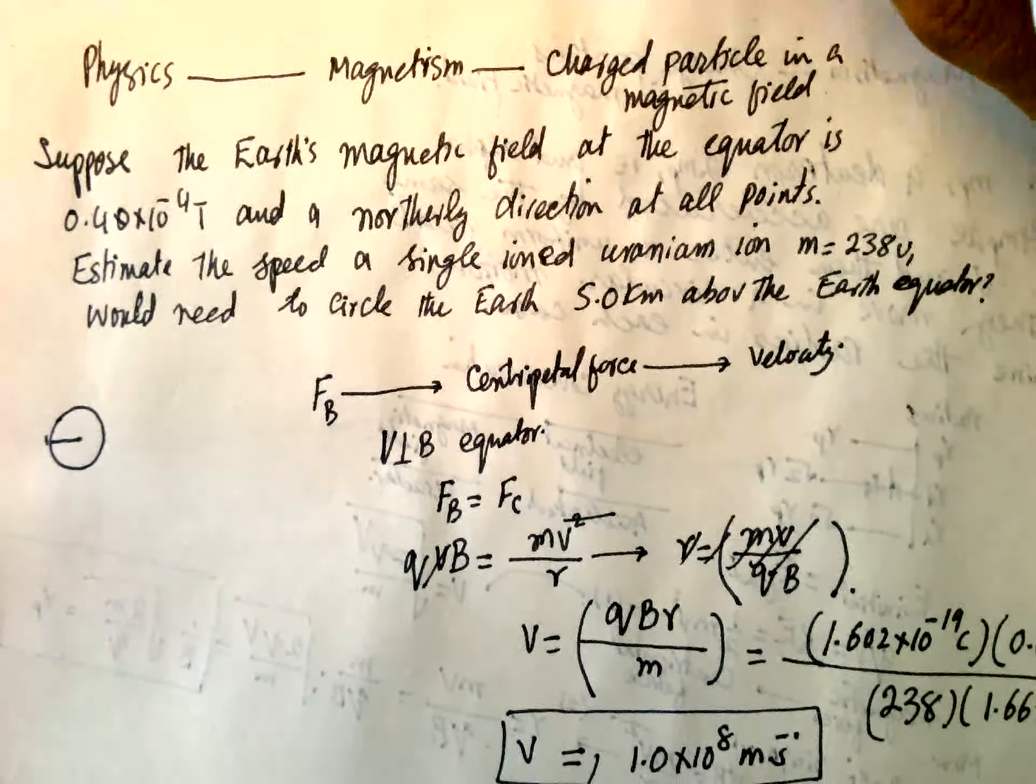Q is a single charge, 1.602 to 10 power minus 19 Coulomb. Velocity is 1.0 into 10 power 8 meter per second. And B is 0.4 into 10 power minus 4 Tesla. M is 238 into 1 atomic mass unit, 1.66 into 10 power minus 27 kg. G, and G is 9.80 meter per second square. And this is equal to.